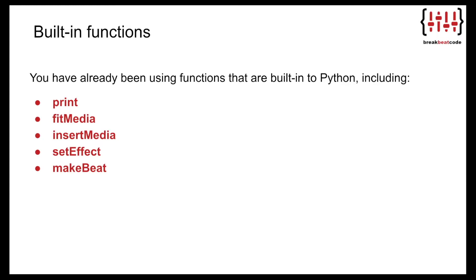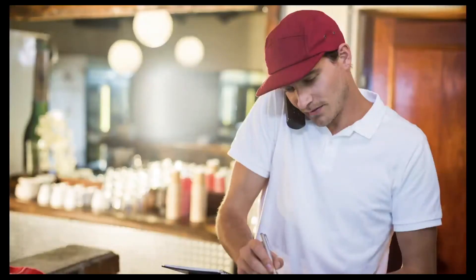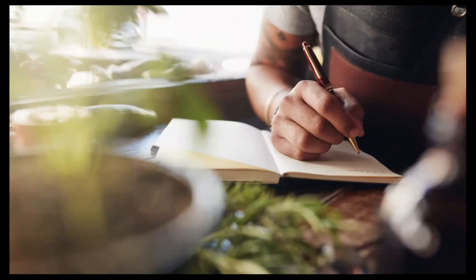The functions you've been using so far are built in — you've already been using functions built into Python such as print, fit media, insert media, set effect, and make beat. You can use the function but you couldn't see how it was created or what the reusable code looked like. It's the same way that you can order pizza on the phone but you can't see what's happening in the kitchen. Creating your own functions in Python is like writing your own recipes — you decide what ingredients you'll have, what you'll do with them, the flavors, and what it will look like when you serve it.